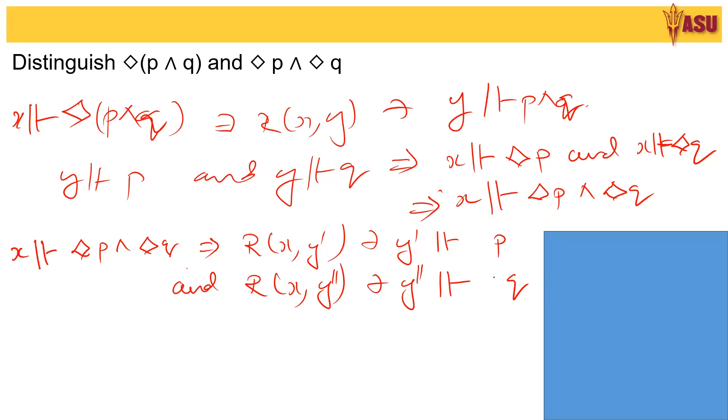Now this is not the same as saying this is not the same as Y belonging to the language of Y having Y double prime P and Q. We cannot prove this from this because Y prime can be different from Y double prime. Let us see a simple graph that satisfies this.